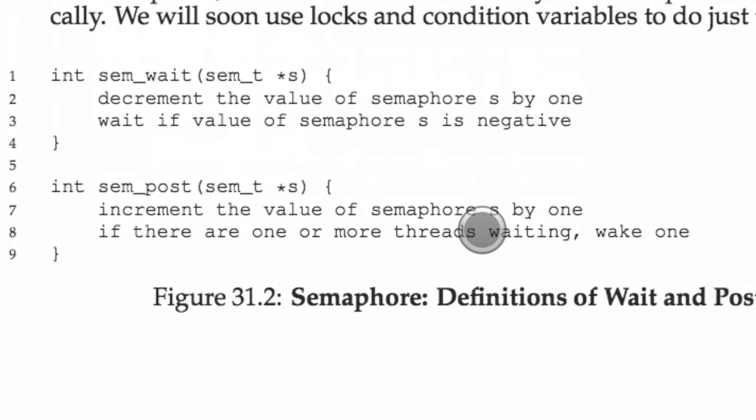Remember that threads, semaphores, and mutexes — the whole point of them is to conserve sharing data, to protect global variables. sem_post will increment the value count — the number of people allowed into the semaphore area — because that semaphore is done. The post marks that you're done with the thread, and wait marks that you're starting the critical section, as it's called.